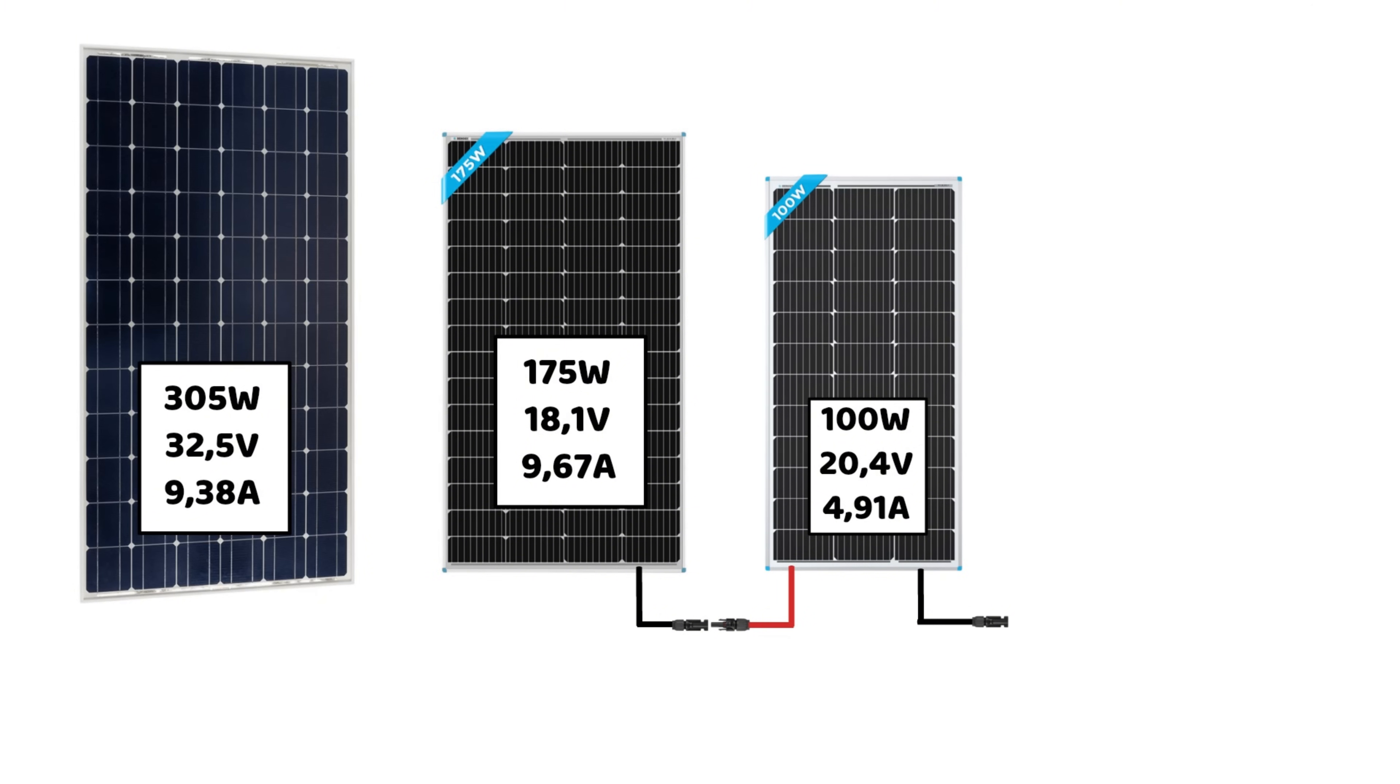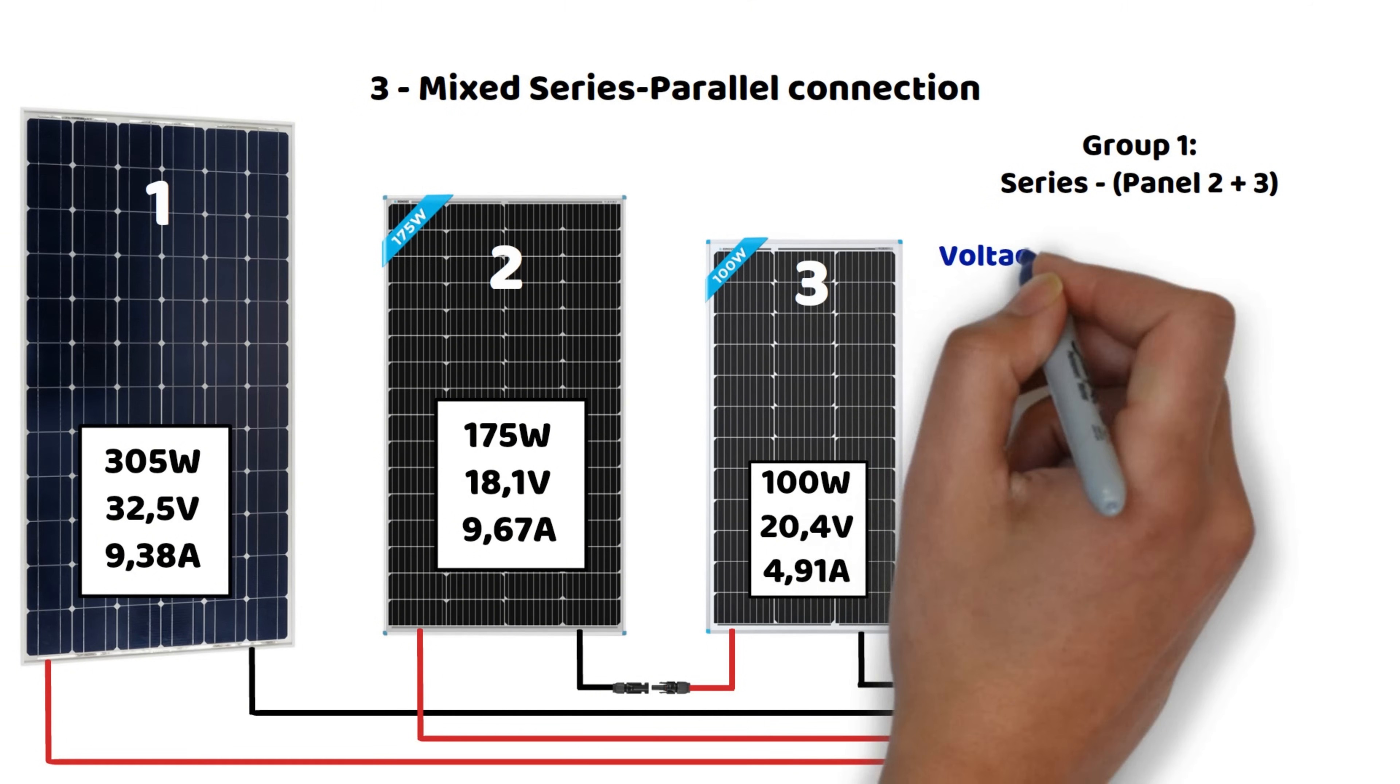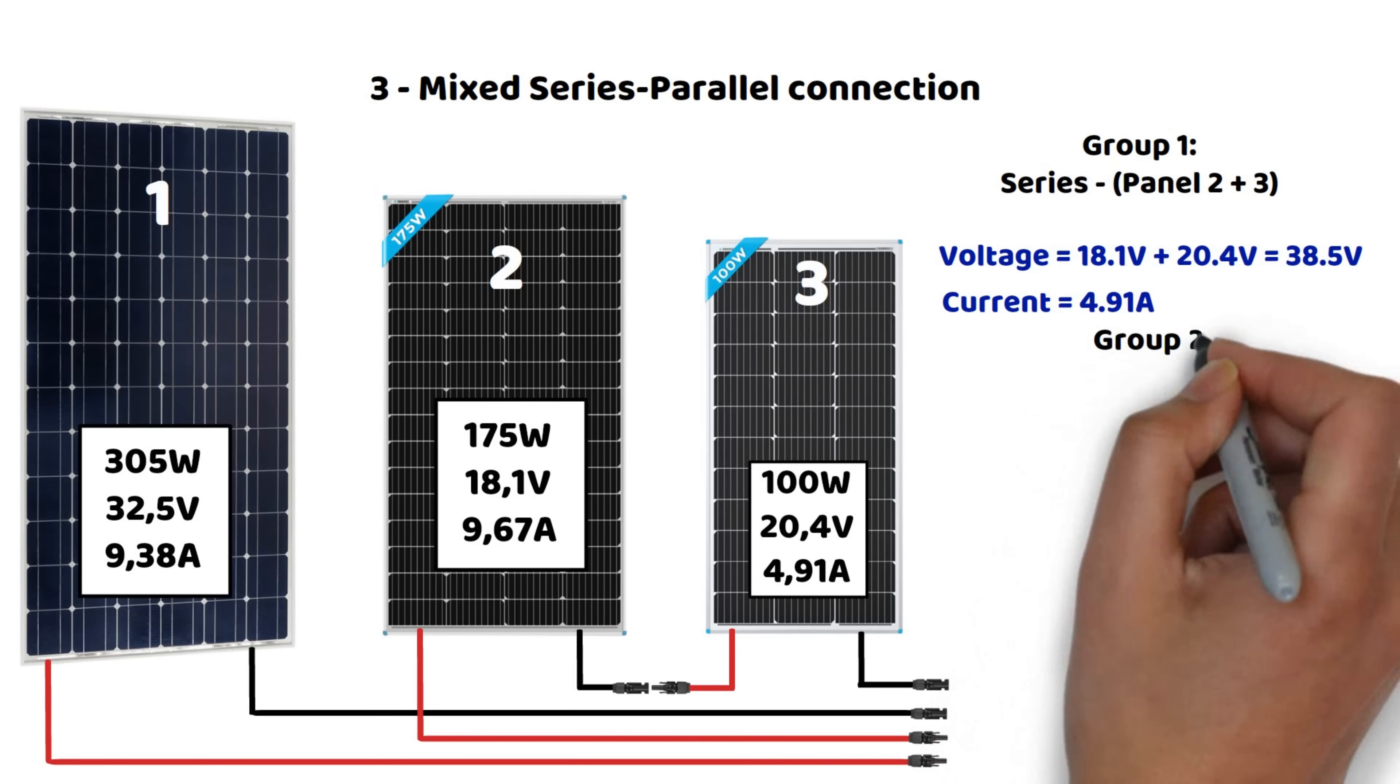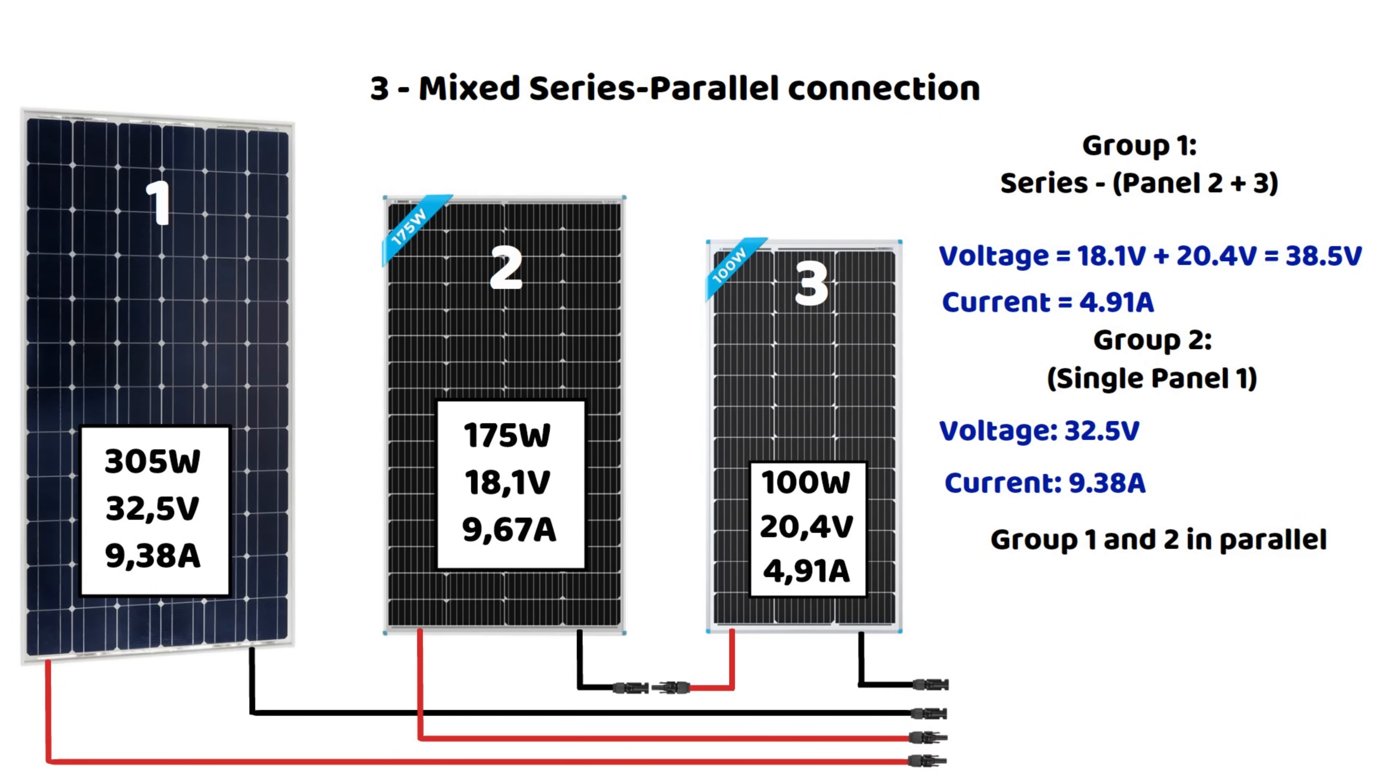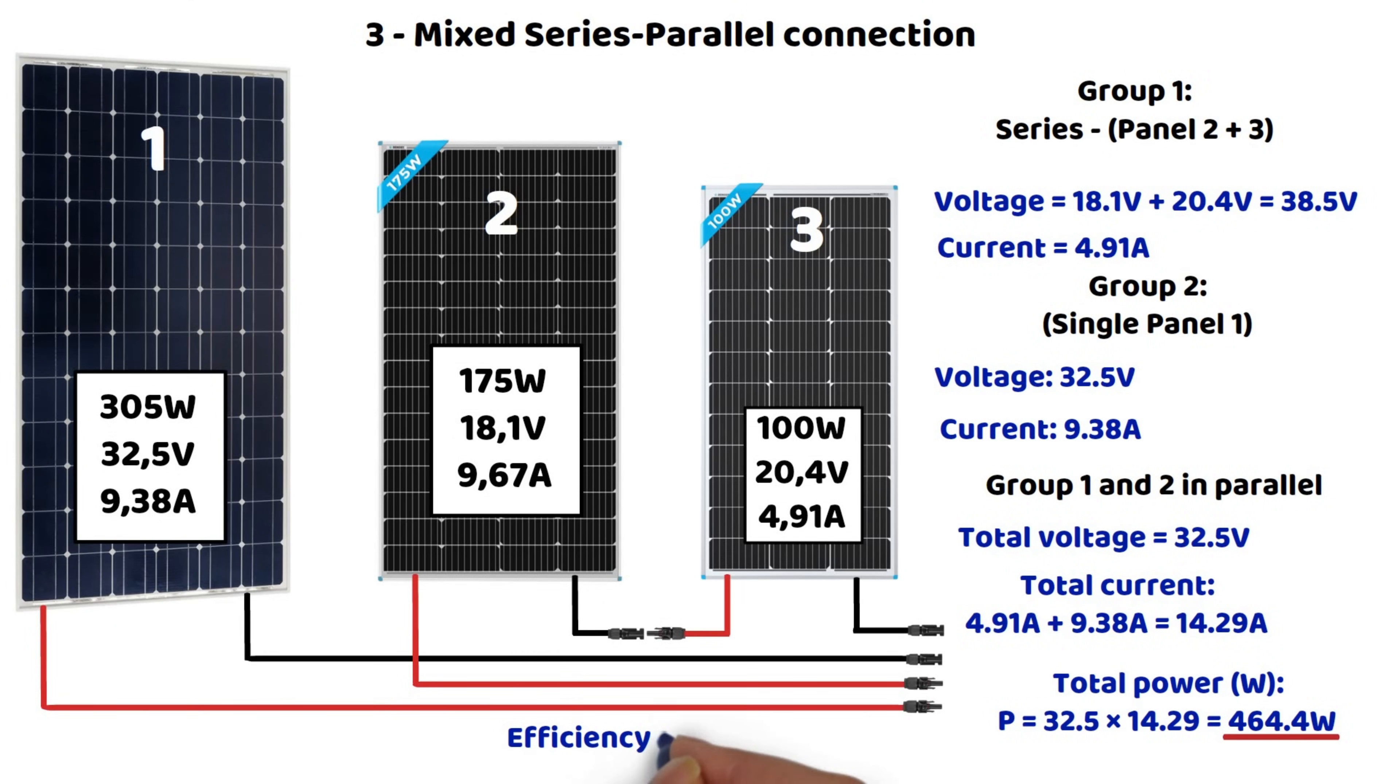Third option to try to improve this setup. Divide the system into two groups with the following scenario: Panels 2 and 3 in series, plus panel 1 alone. Let's see what this gives us. Group 1 in series, panels 2 plus 3. The voltage will be 18.1 volts plus 20.4 volts equals 38.5 volts. The current will be 4.91 amps. Group 2, panel 1 alone, voltage 32.5 volts, current 9.38A. Then, these two groups are connected in parallel. The total voltage will be the lower voltage, which is 32.5 volts. The total current will be 4.91A plus 9.38A equals 14.29A. This gives us a calculated power of 32.5 volts times 14.29 amps equals 464.4 watts. Here, we improve efficiency to 80.1%. This remains the most optimal configuration without adding any devices, but for me, it is still insufficient in this particular case.